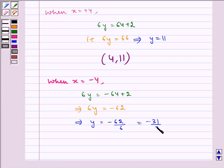It implies y is equal to minus 31 by 3. Hence, the second required point is minus 4, minus 31 by 3.